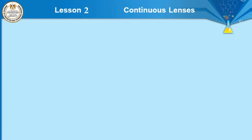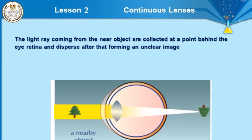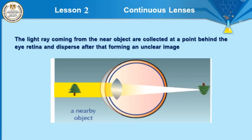When light rays coming from a near object are collected at a point behind the retina, the image formed is unclear. So the person suffering from long sightedness sees near objects as distorted, as you see in the picture, because the image is formed behind the retina.